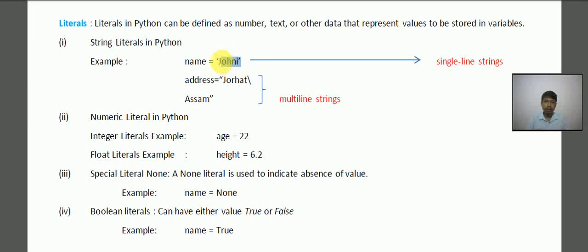So here as you can see, single line strings, so these are the single line strings. The next one is address = 'Jorhat\nAssam'. So this is a multi-line string.